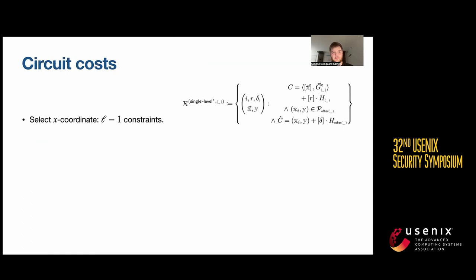To sum up the costs of all these things, we have one thing that's variable and that's selecting the exponent, which depends linearly on the branching factor of the tree. Decompressing the point is just a single constraint. Point addition is around 10 constraints or so.